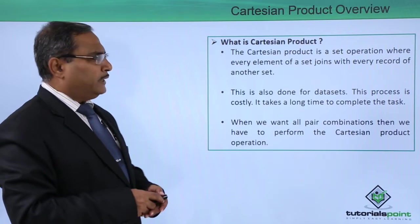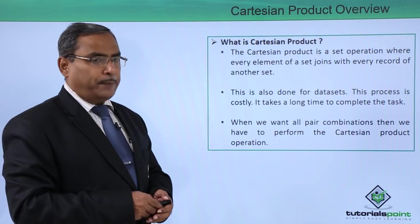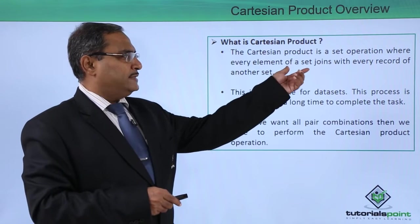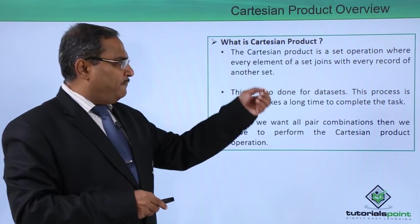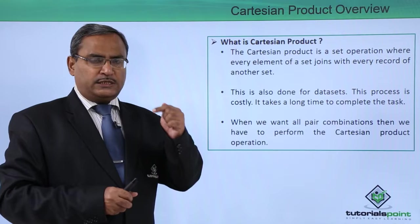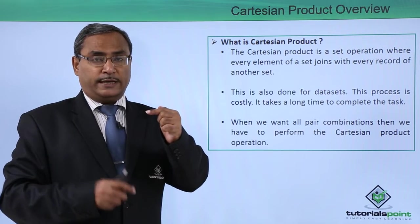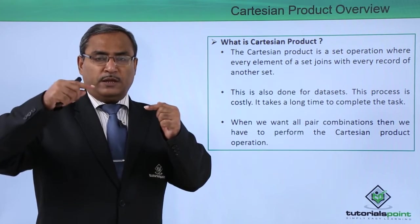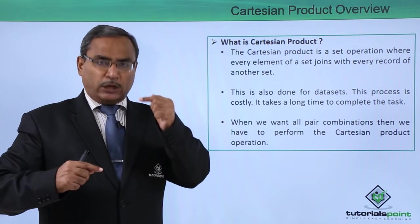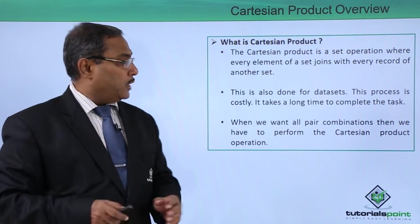So what is Cartesian product? The Cartesian product is a set operation where every element of a set joins with every record of another set. So one record of this particular set will be doing the joining with the rest of all records from the other set, and that will be true for all the elements in this set. So that is our Cartesian product.